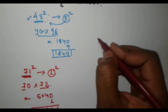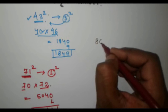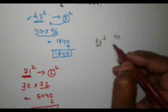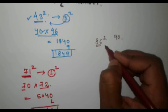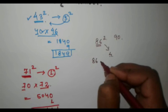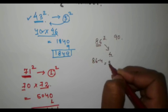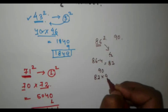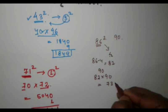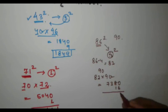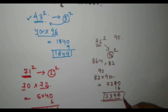Now let's take another example: 86 squared. Find the nearest tenth digit number, which is 90. Subtract 86 from 90, which gives us 4. Subtract 4 from 86 to get 82, and add 4 to 86 to get 90. Multiply 82 by 90 to get 7380. Now square the difference 4 to get 16, and add it up to get 7396. That is the answer for 86 squared.